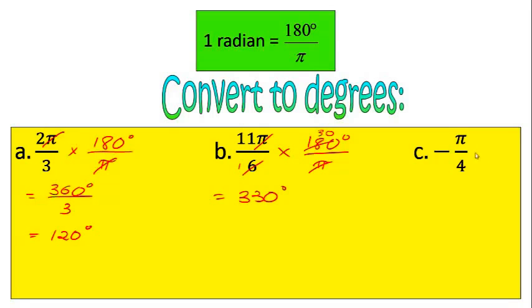Last one, same thing: multiply this by 180 degrees over π. My πs cancel out, so I'm left with negative 180 degrees over 4, which is equal to negative 45 degrees.